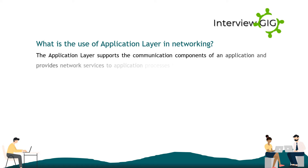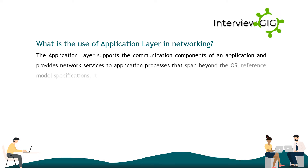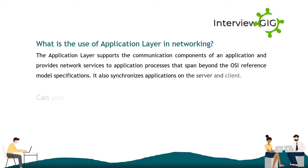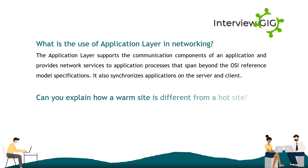What is the use of the application layer in networking? The application layer supports the communication components of an application and provides network services to application processes that span beyond the OSI reference model specifications. It also synchronizes applications on the server and client.